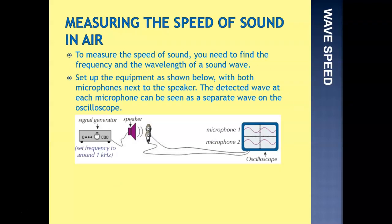To measure the speed of sound, we need to find the frequency and the wavelength of a sound wave. So this is what we do, we set up the equipment as you can see below. We've got a signal generator and a speaker, and we have two microphones. They'd be linked to an oscilloscope, and that oscilloscope shows us the frequency and wavelength of the wave. We set the signal generator to a frequency around 1 kHz, about 1000 Hz. If we start with both microphones next to the speaker, the detected wave at each microphone can be seen as a separate wave on the oscilloscopes. You have microphone 1 and microphone 2.